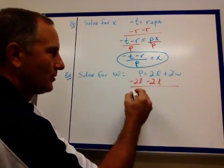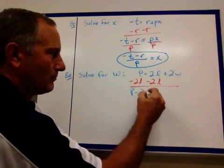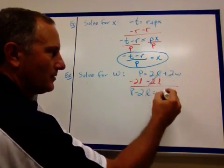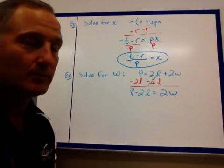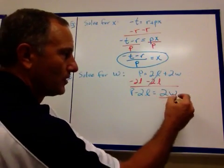So, now I get p minus 2l. It cancels here. Left with 2w. 2 times w, multiplication problem. We undo that by dividing.